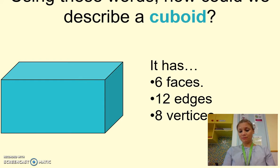The cuboid is very similar to the cube. However, it has rectangular faces. It still has six faces and twelve edges and eight vertices.